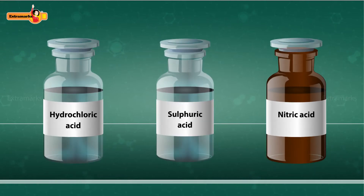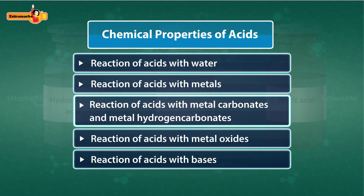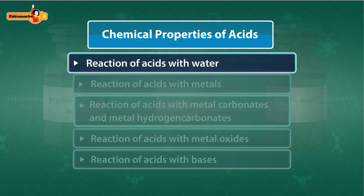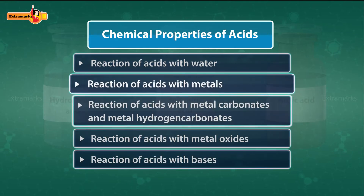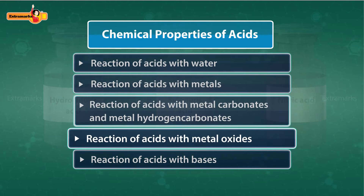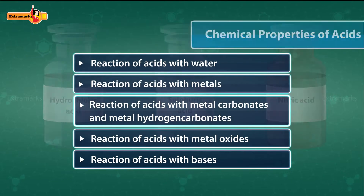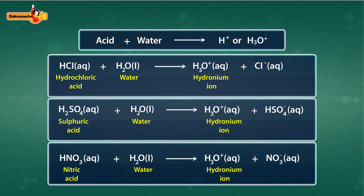Hydrochloric acid, sulfuric acid, and nitric acid are inorganic acids having similar chemical properties. Chemical properties of acids include their reaction with water, metals, metal carbonates and hydrogen carbonates, metal oxides, and bases. Acids on reaction with water form H⁺ or hydronium ions. Due to the formation of these ions, aqueous solutions of acids exhibit distinctive properties.